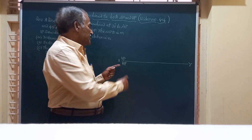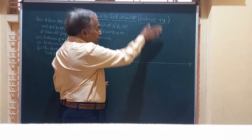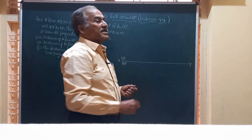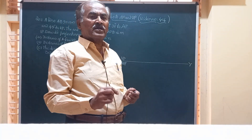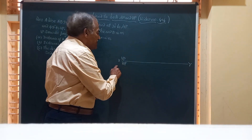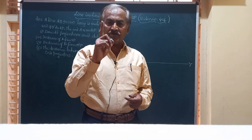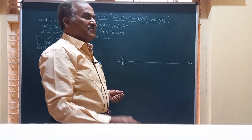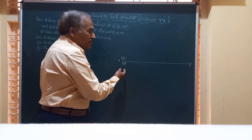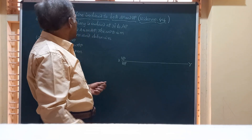Let us commence the question by drawing an XY line, which represents the line of intersection of VP and HP. It is also sometimes called a reference line, and we mark VP above and HP below the XY line to represent first angle projection. If it were third angle projection, HP would be above and VP below.